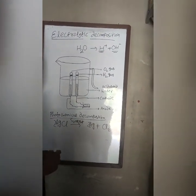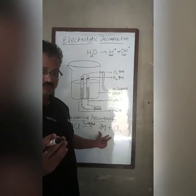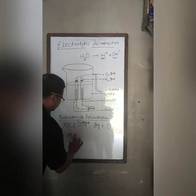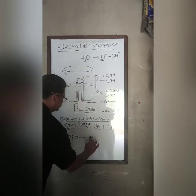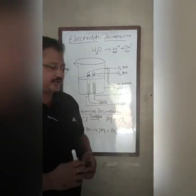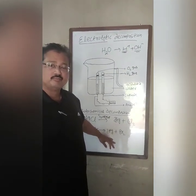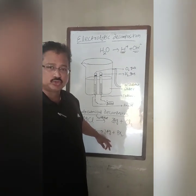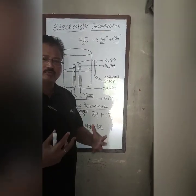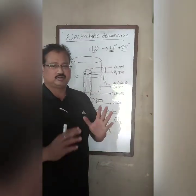Chlorine is the gaseous product liberated, leaving behind silvery white silver. Silver chloride is a white-colored salt that decomposes into silver and chlorine. Similarly, silver bromide also decomposes into silver and bromine — bromine being the reddish-brown vapor liberated. Silver bromide was used in black and white photography, which is a common exam question. When a photograph is taken, light causes silver bromide to decompose into silver and bromine, forming a layer of silver on the photographic film used to develop the photograph.